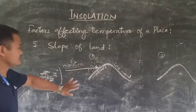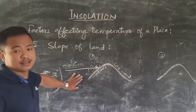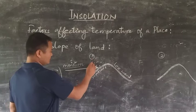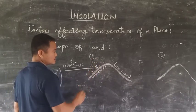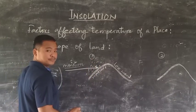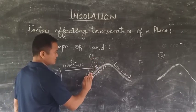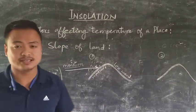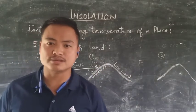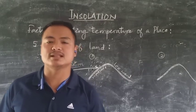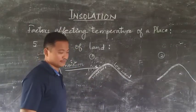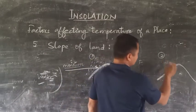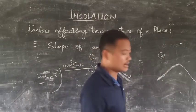The slope of the land affects the temperature of a place. With rainfall occurring on the windward slope, the temperature on that side will be less. On the leeward side, since there is not much rainfall, the temperature would be slightly higher as compared to the windward side.